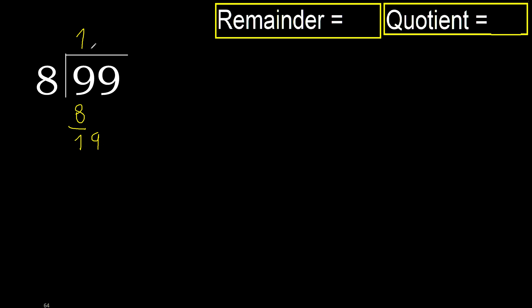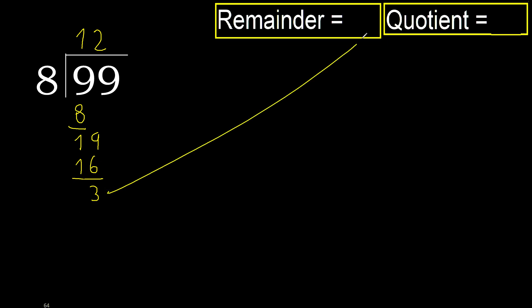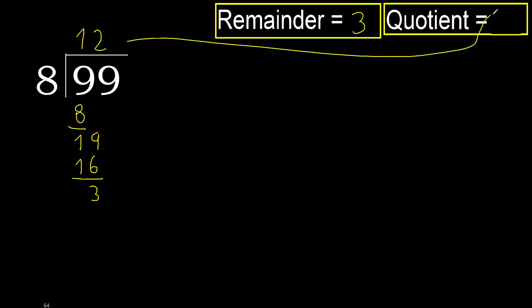8 multiplied by 3 is 24 — 24 is greater. Multiplied by 2 is 16 — 16 is not greater. Subtract, remainder is 3. Next — there is no next number, therefore finish it. The answer is 12.